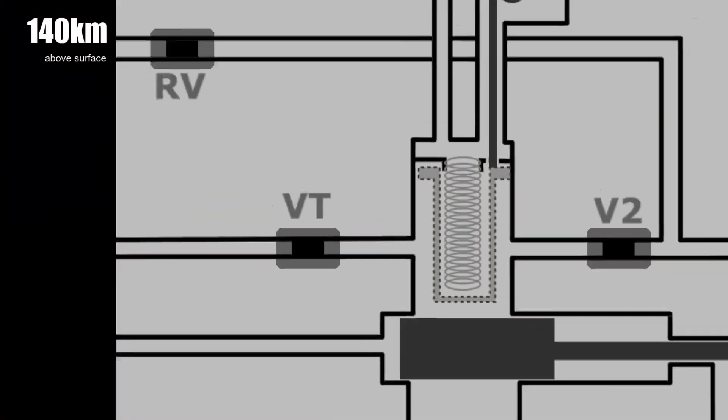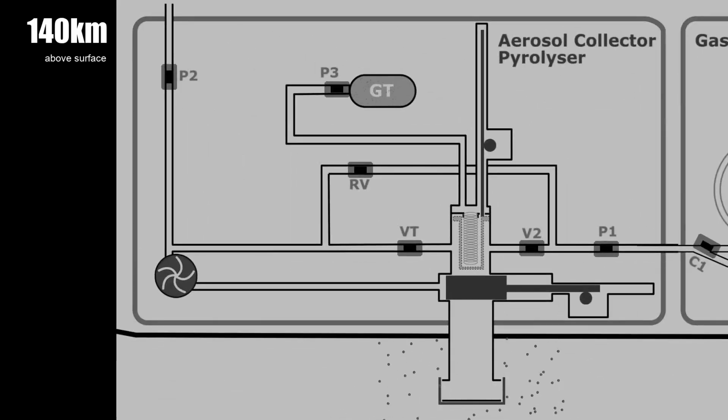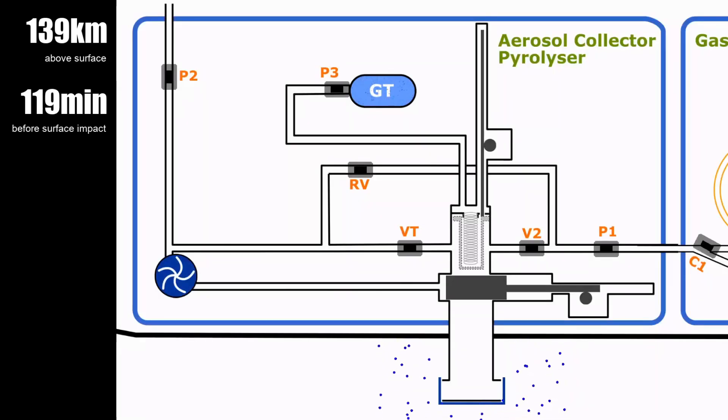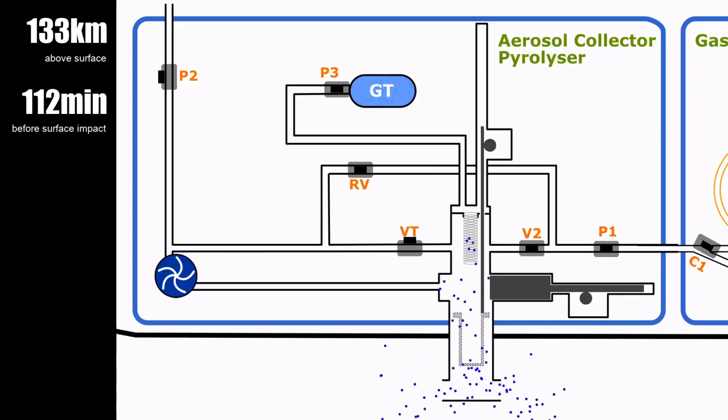At about 140 kilometers from the surface and 120 minutes before surface impact, the ACP is activated. The ceiling cover is released and the oven is vented through valve P2 NVT into Titan's atmosphere. This is to ensure that no foreign particles are in the oven when pyrolysis starts later on. As the venting continues, the gate valve is open and the filter motor is activated to push the collection filter through the open gate valve and into the sampling tube.